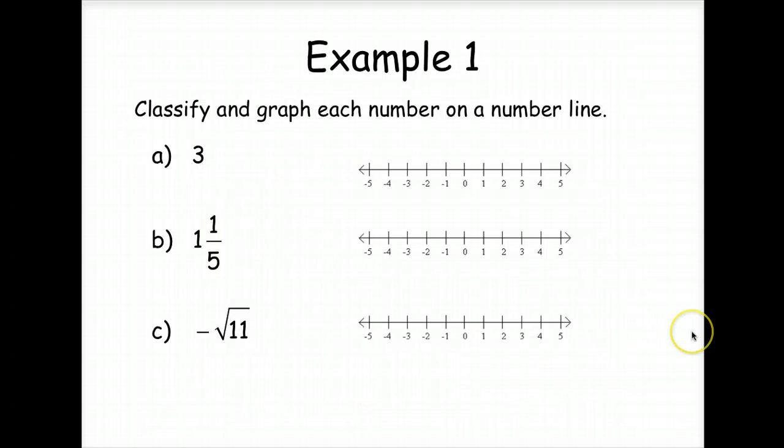Let's look at example 1. So we'll find that on page 5 of your worksheet. Classify and graph each number on a number line. So this is pretty simple. We've got the number 3. So do you see where we place it? Yes. We graph it on the number 3. So 3 belongs to what subset of real numbers? It's natural, it's whole, it's integer, and it's rational. So it belongs to all of them. It's a real number that belongs to all of these sets.